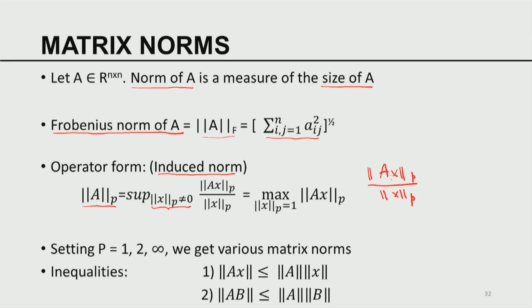This ratio varies as A is fixed and x varies over all of Rⁿ — infinitely many x's. As x varies, this ratio varies, and we are interested in the maximum value. For practical purposes, the supremum can be thought of as the maximum value of ‖Ax‖_p / ‖x‖_p. This tells you the maximum magnification factor: if the ratio exceeds 1, Ax is larger than x; if less than 1, there is a shrinkage.